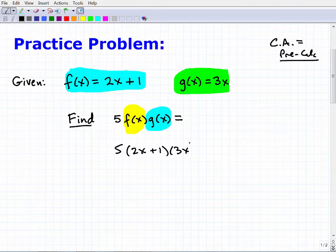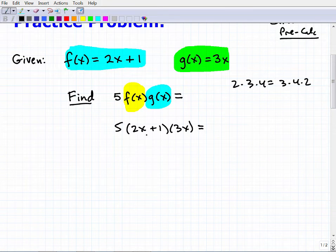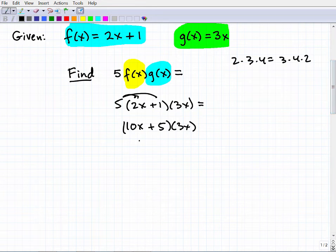Order doesn't make a difference in multiplication, right? So 2 times 3 times 4 is the same as 3 times 4 times 2. Let's make our life easier. I'll use the distributive property here first on the 5. Let's follow the order of operations a bit. So this will be 10x plus 5, and we still have to multiply that by 3x. Let's write the 3x over here. So that'd be 3x times (10x + 5).